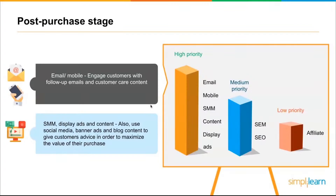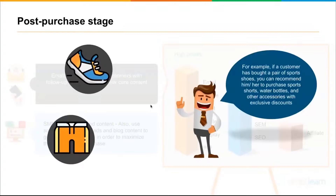With social, display, and content, use banner ads or blog content to give customers advice in order to maximize the value of their purchase. For example, after someone buys a product, you can tell them: 'Did you know you could do this, this, and this with it?' If a customer bought a pair of sports shoes, you can recommend a cross-sale — a pair of shorts, a water bottle, or an accessory with an exclusive discount. That's the idea of the post-purchase stage: maximize channels to answer what else customers could purchase and how to build loyalty.